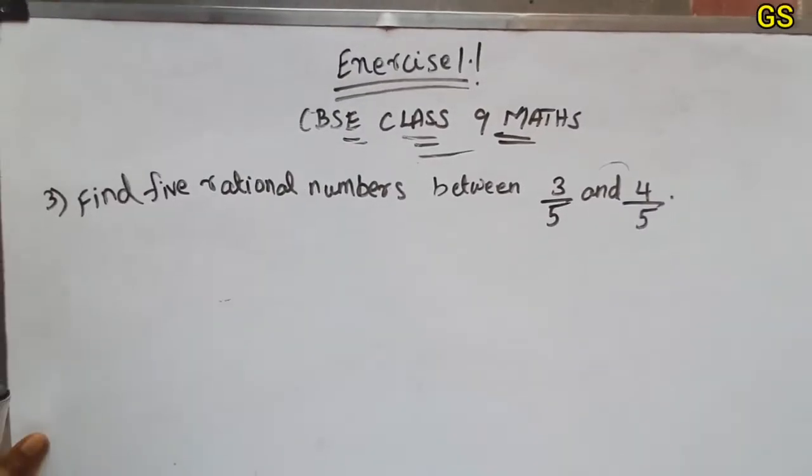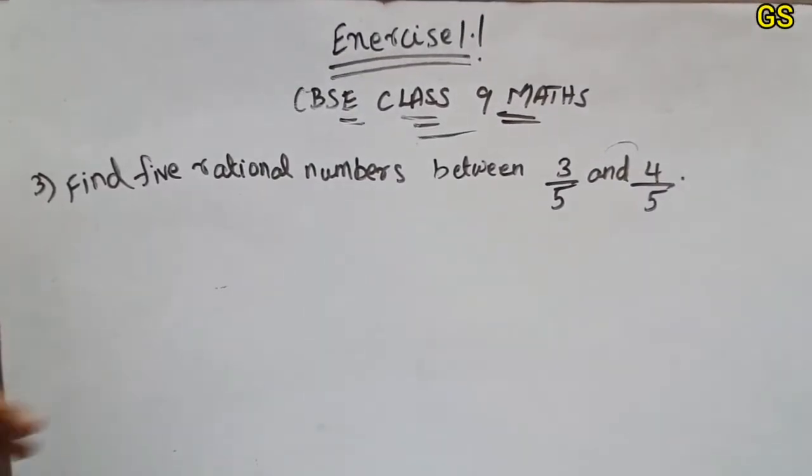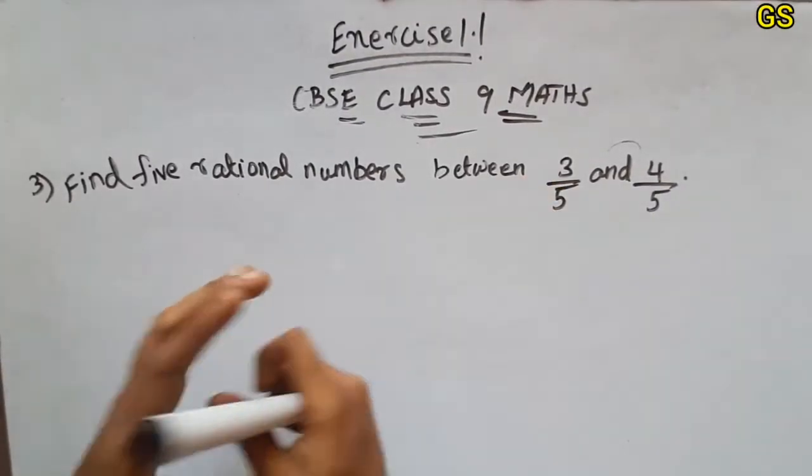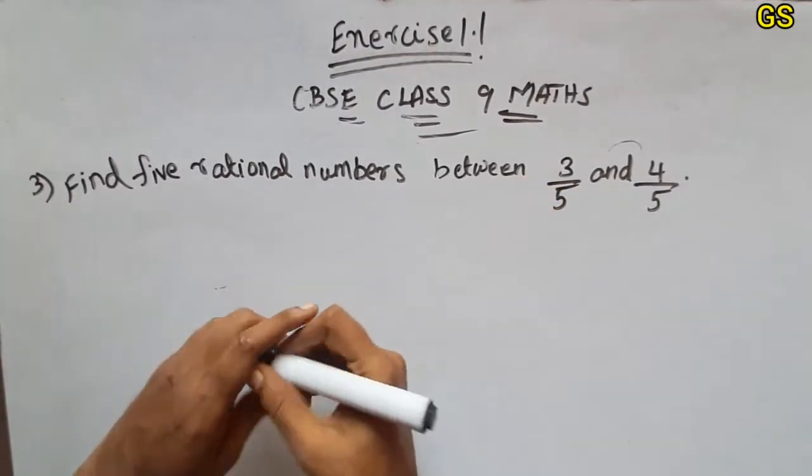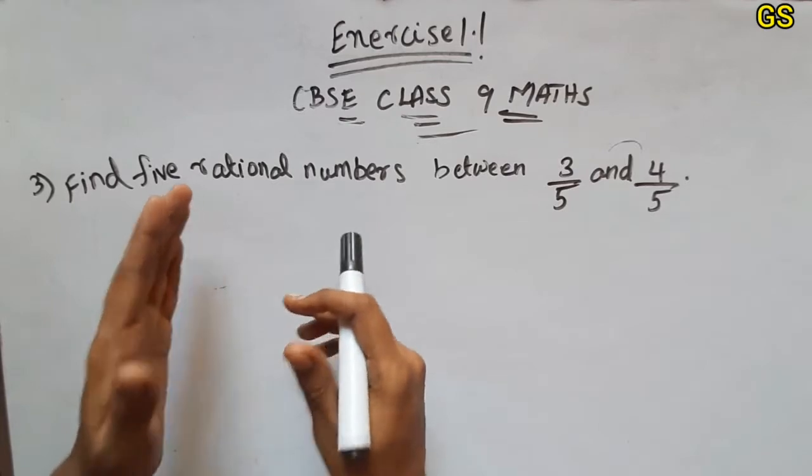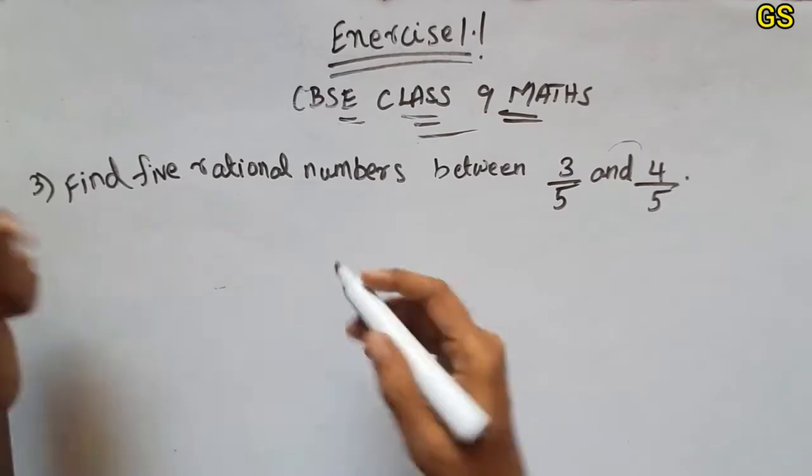Hi friends, welcome to Texas 1.1 CBC Class 9th Math. Part 2 — we need to find 5 rational numbers for problem 3.